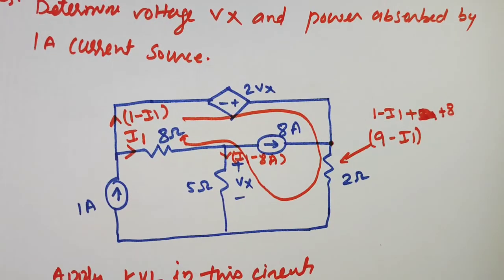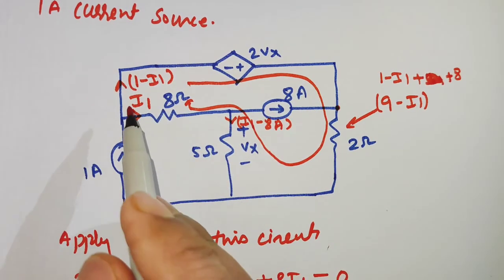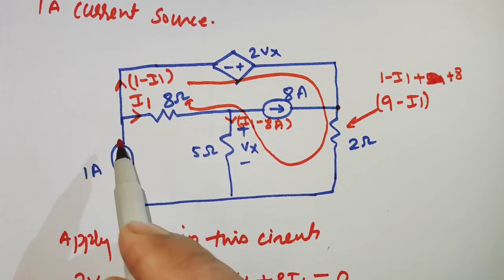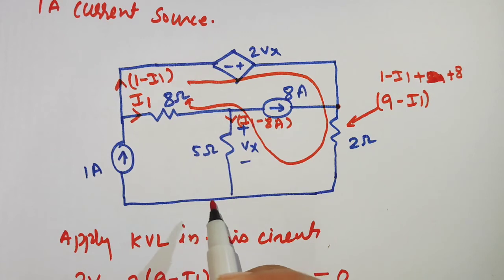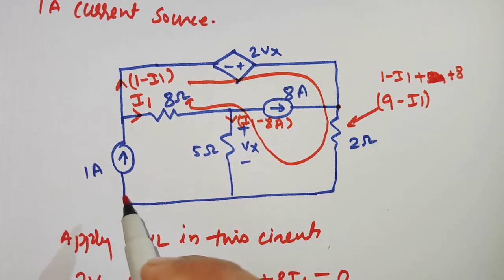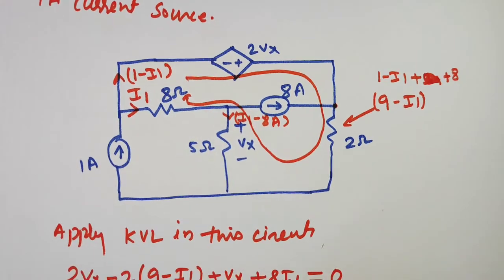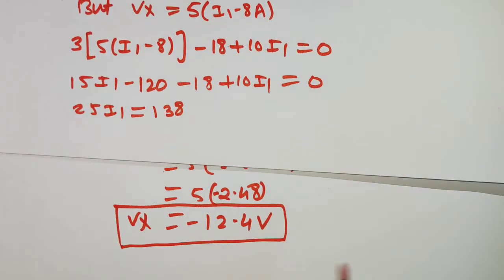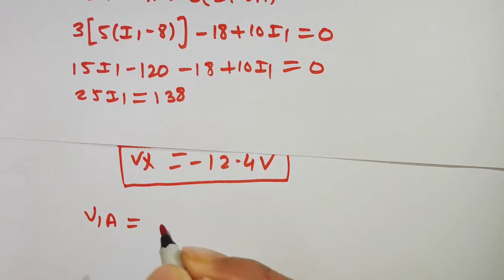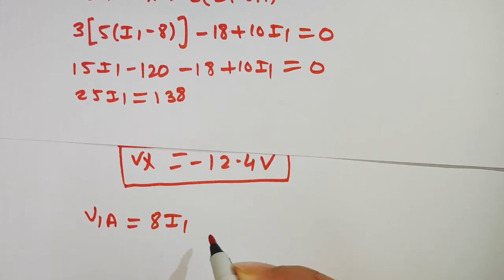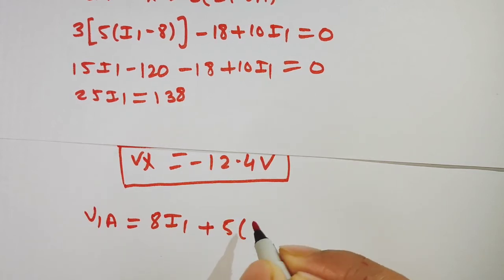Now we need to find the voltage across the 1 ampere current source to find the power absorbed by it. We need the voltage across this source. The current is 1 ampere and we need the voltage across it to compute the power.